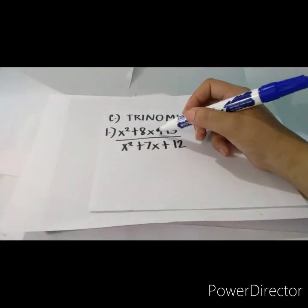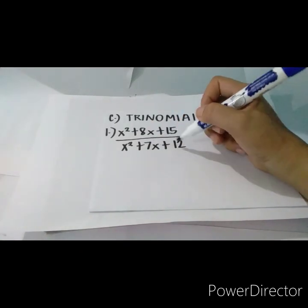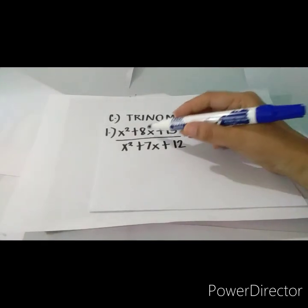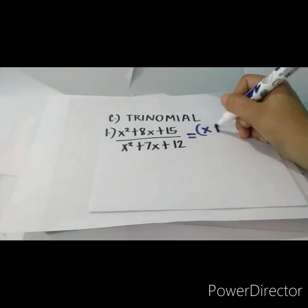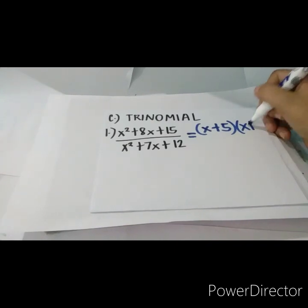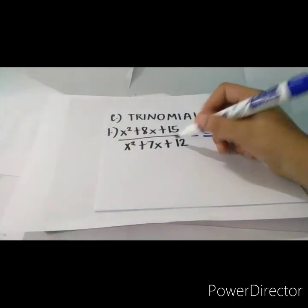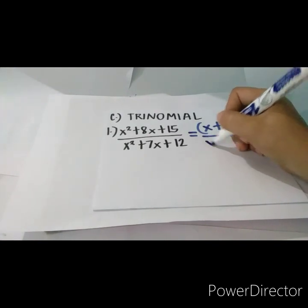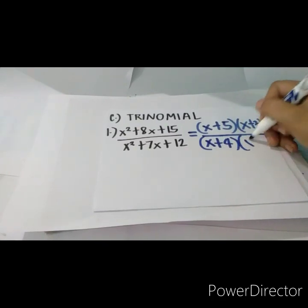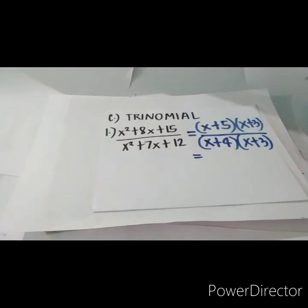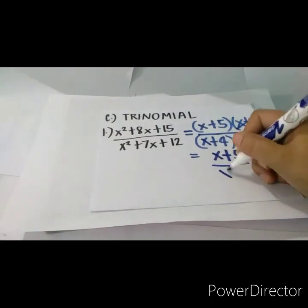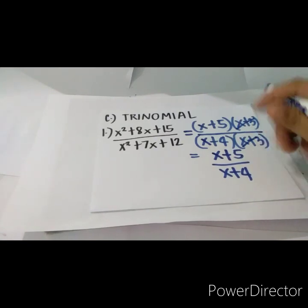Next we have trinomials. The first example is (x squared + 8x + 15) over (x squared + 7x + 12). Factor each trinomial: find factors of 15 that sum to 8, which are positive 3 and positive 5, giving (x + 3)(x + 5). Find factors of 12 that sum to 7, which are positive 4 and positive 3, giving (x + 4)(x + 3). Cancel the common factor (x + 3). The final answer is (x + 5) over (x + 4).